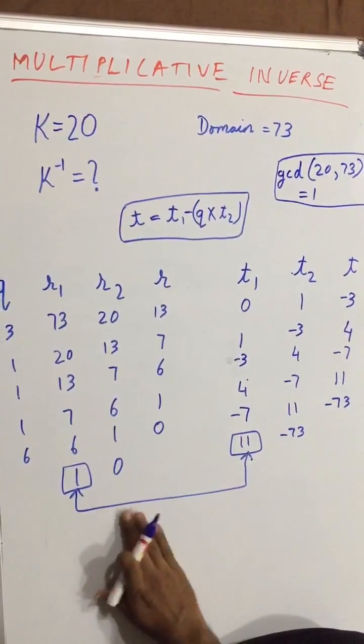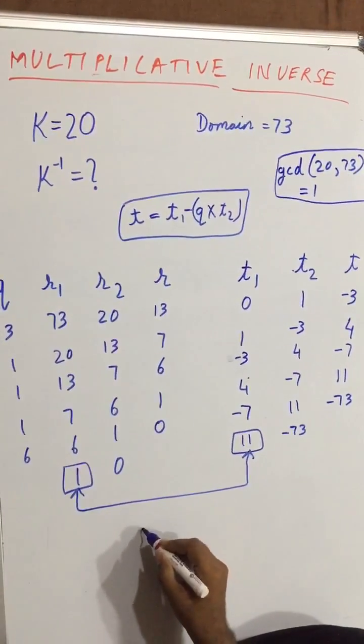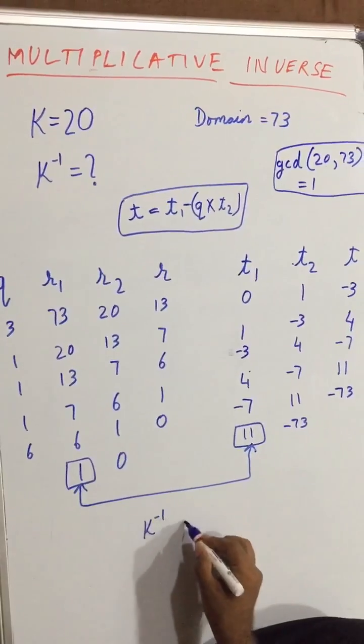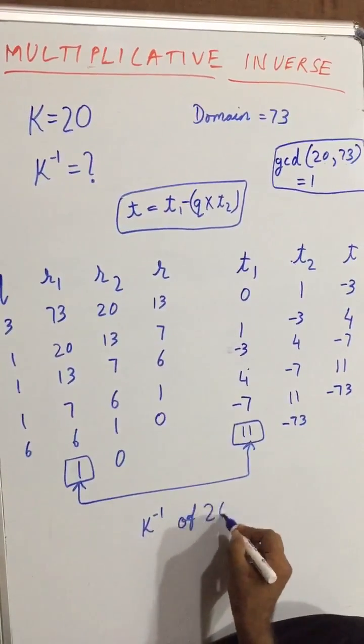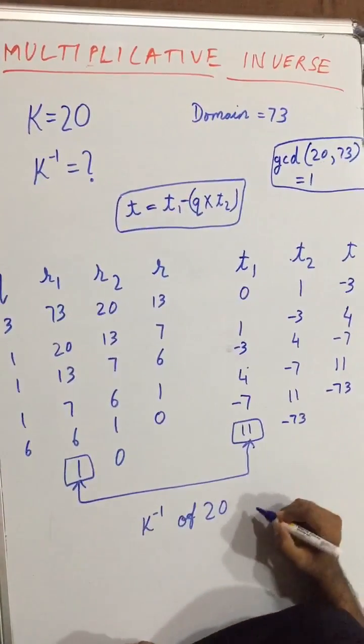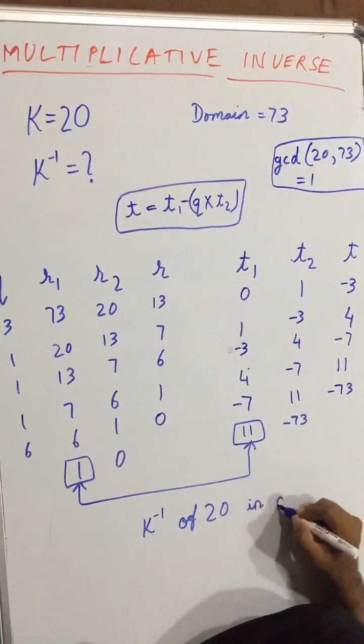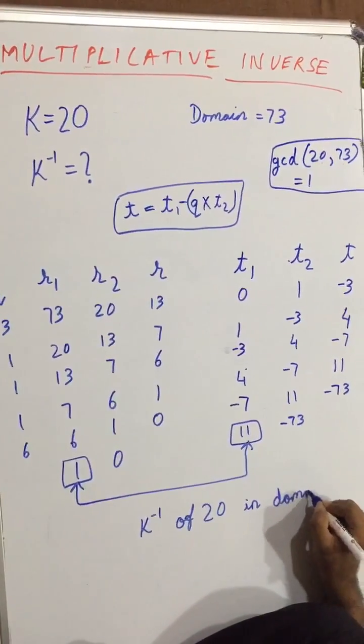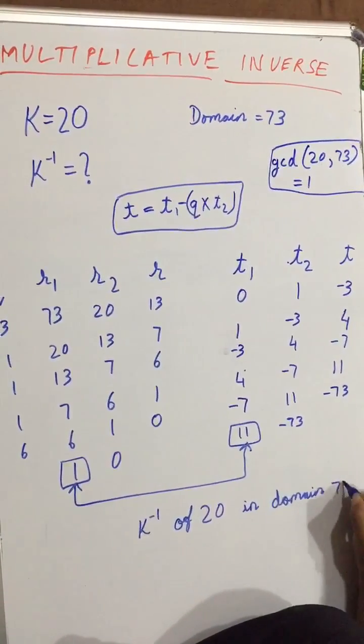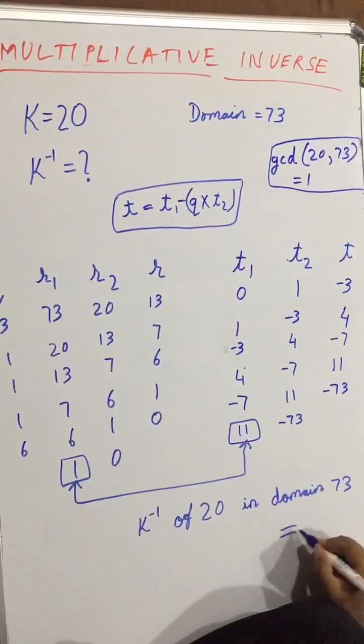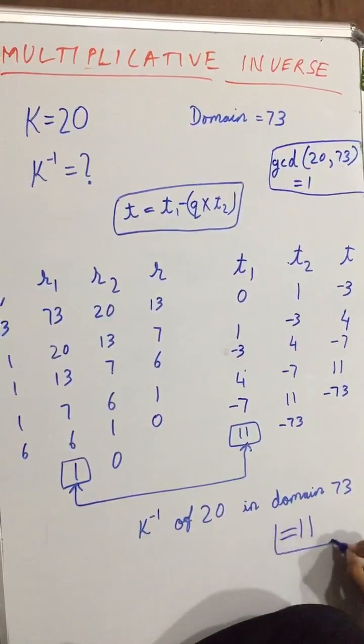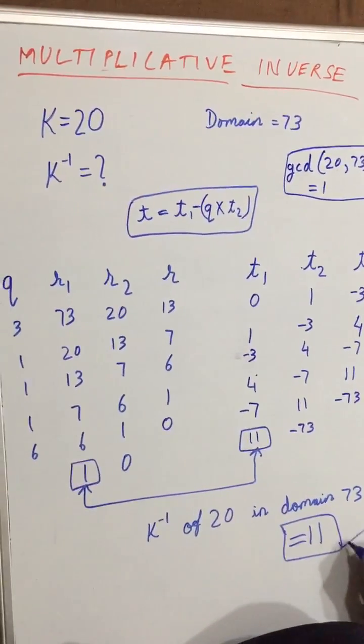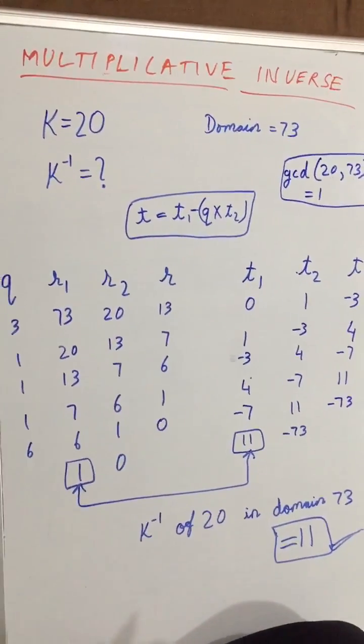So here we can surely say that K inverse of 20 in domain 73 is equal to 11. All right, thank you.